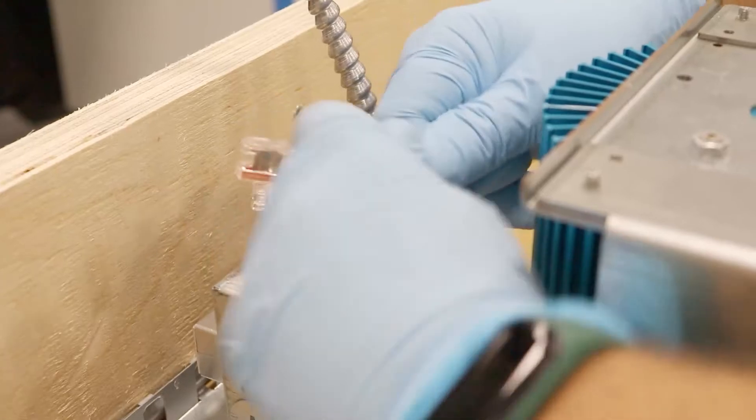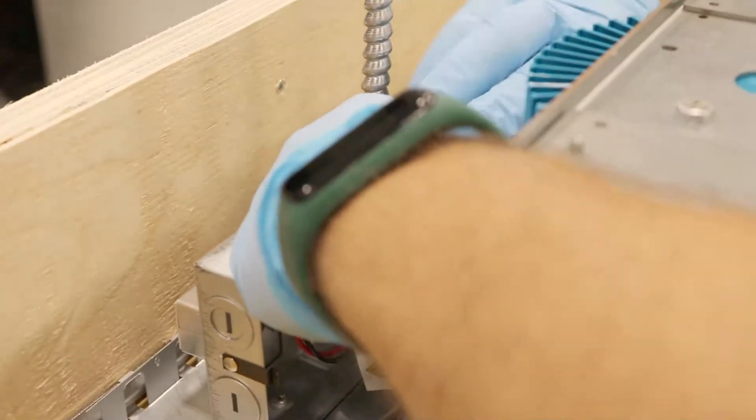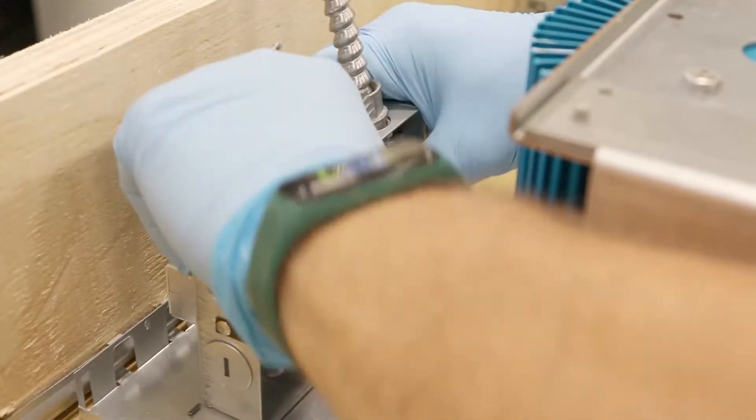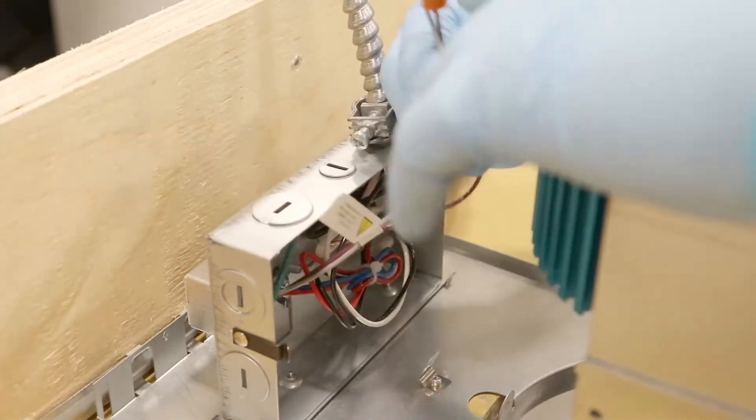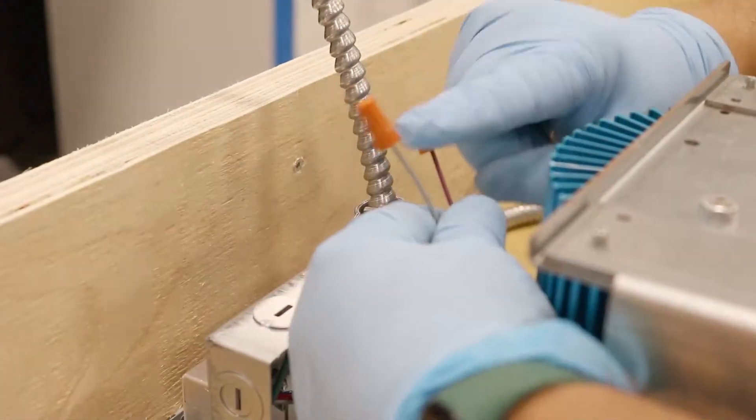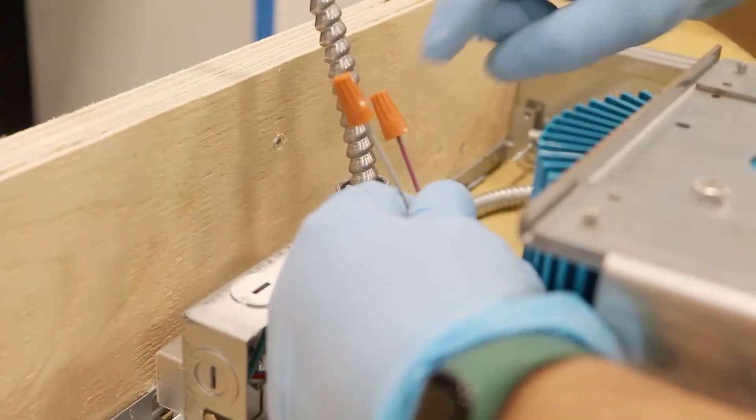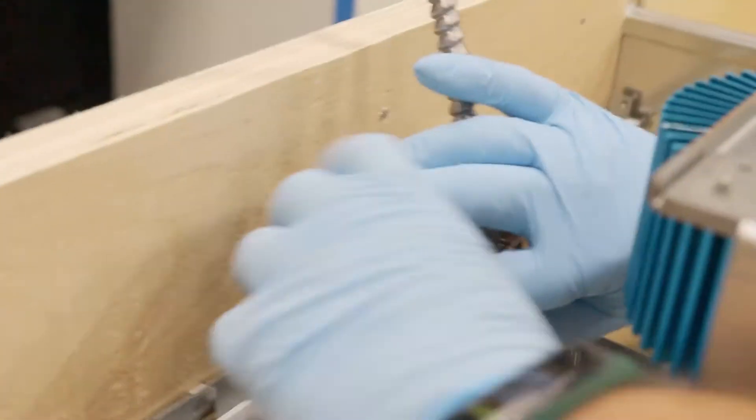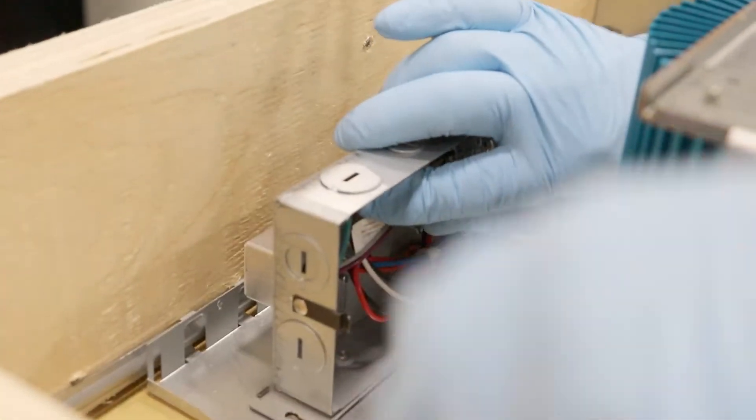If you're using 0-10 volt dimming, connect matching purple and grey wires with twist wire connectors. Apply suitable wiring diagram for fixture. Make certain there are no exposed strands of wire. Place all wiring and connectors back in junction box and return the cover.